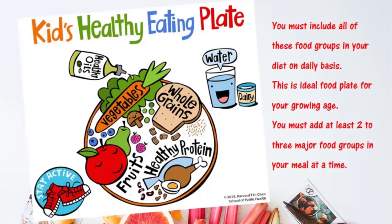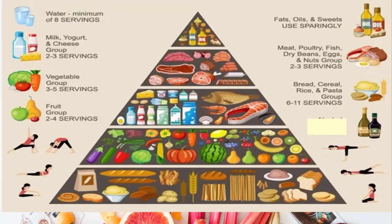This is a healthy eating plate that I want you to have in your life. You must add two to three food groups in your meal. This is called a food pyramid — the largest group must be greens, which you can see at the bottom, and the least must be oils. Stay healthy and do some exercises also.